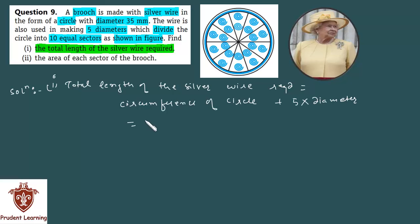Now circumference of circle plus five times diameter. Substitute: pi ke place pe ap 22 by 7 le sakte, into diameter given hai 35 mm, plus five times diameter, diameter again 35 mm hai.